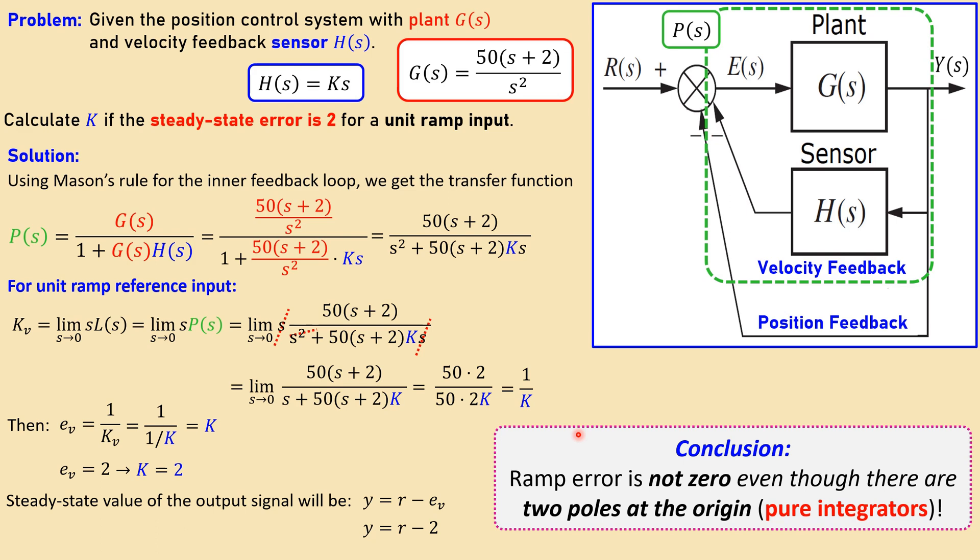So it's really important to also consider the actual loop transfer function and don't look at the poles at the origin. So this is an interesting conclusion here. Now look at the simulation results.